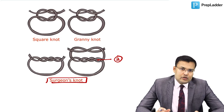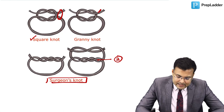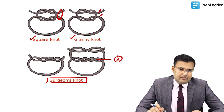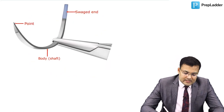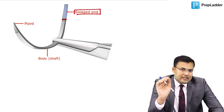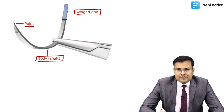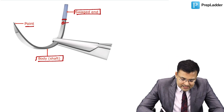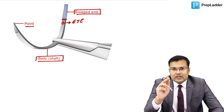Round body needles are further divided into taper point (pointed end tapering to a fine tip) and blunt point. Round body needles are non-traumatic and are used for delicate structures such as bladder and bowel. Cutting needles are traumatic and are used to pierce tough structures like skin, sheath, and fascia.